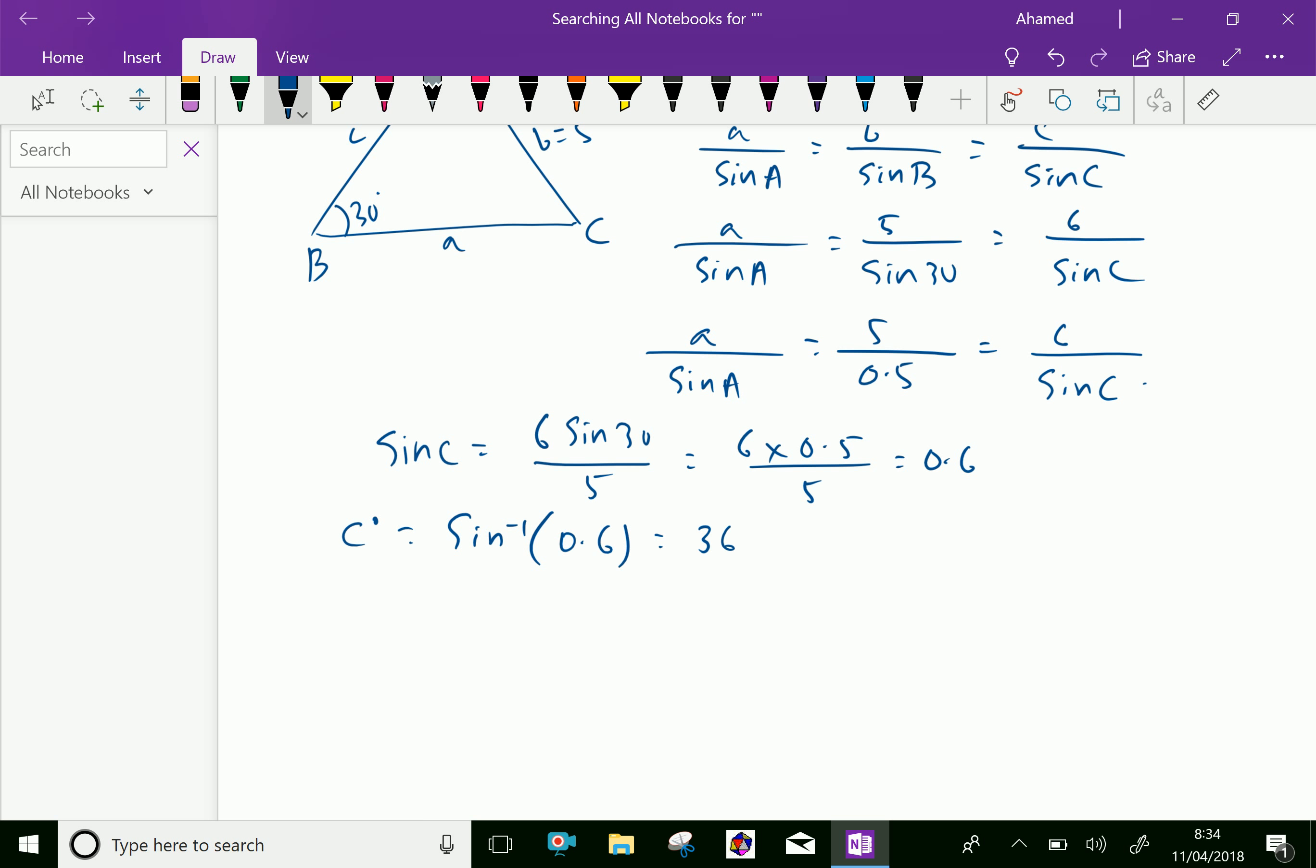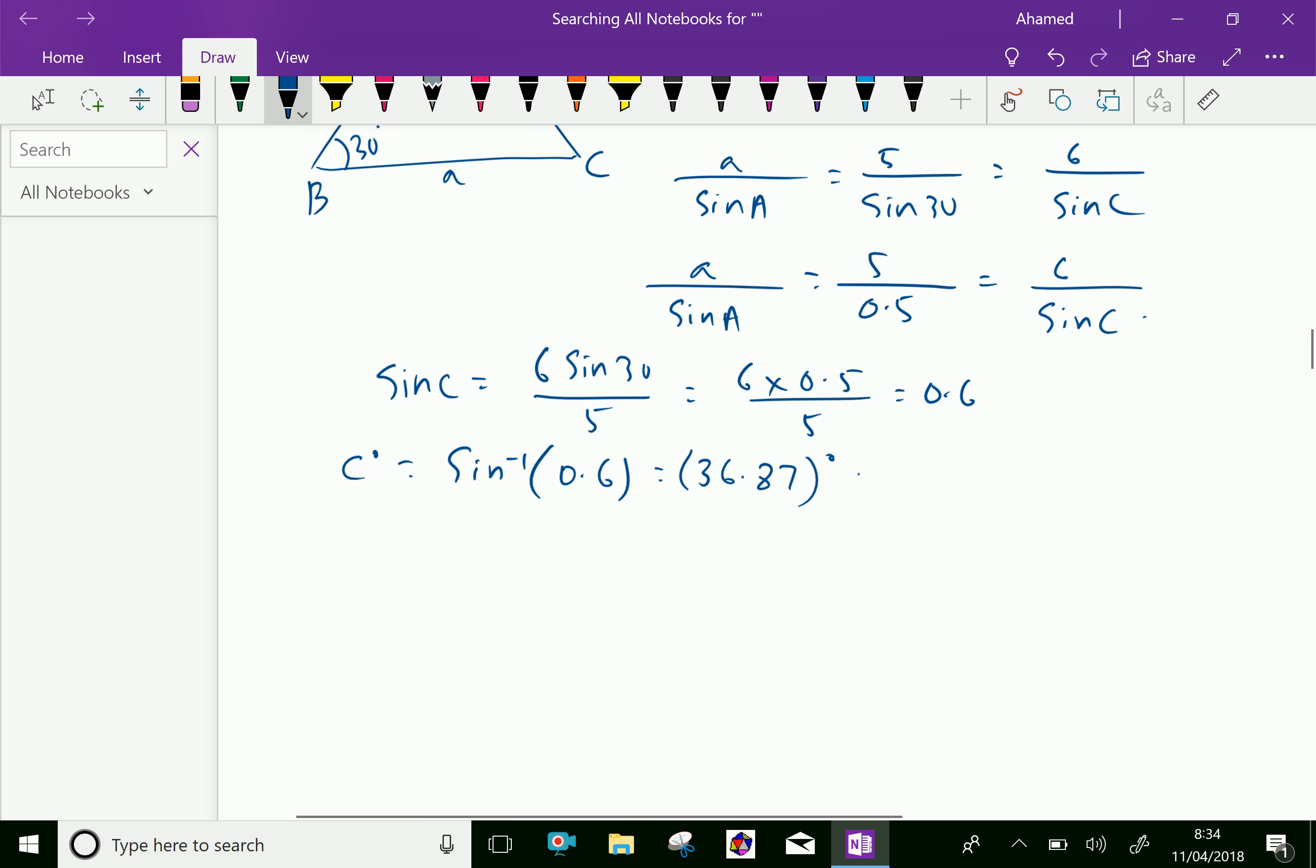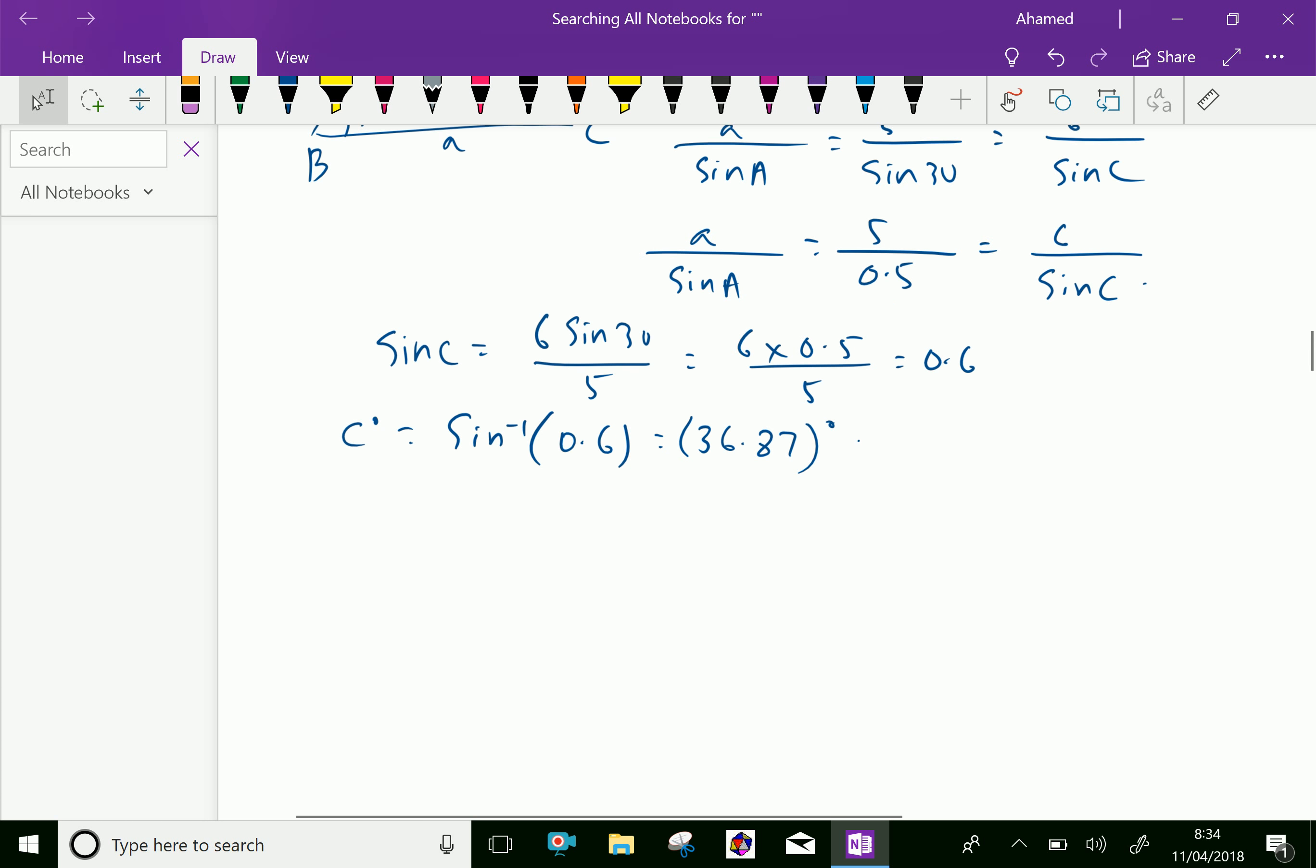36.87 degrees. Now, if you convert this as degrees and minutes, 36 degrees plus 0.87 times 60,